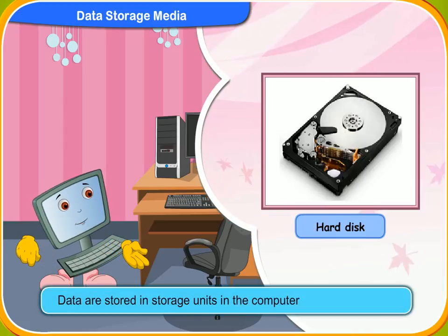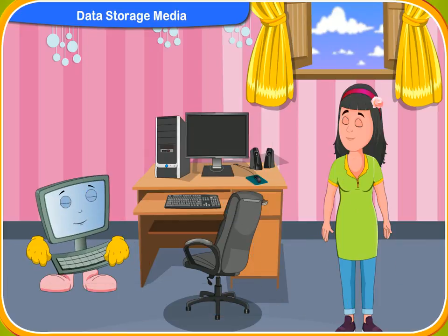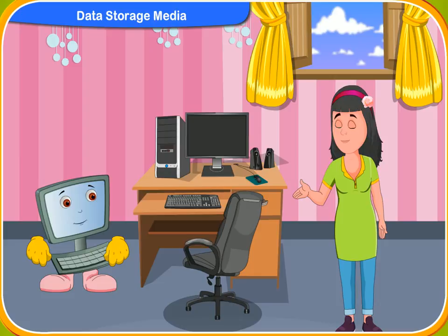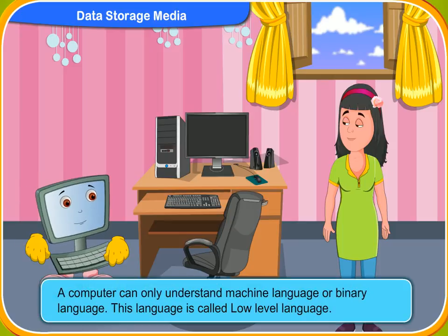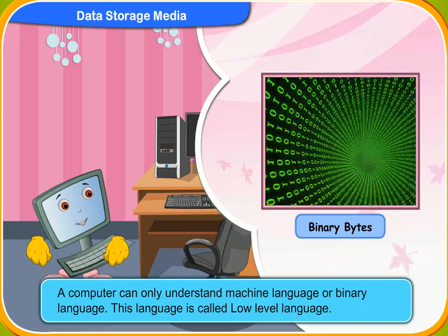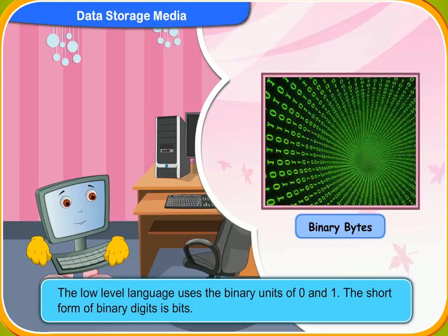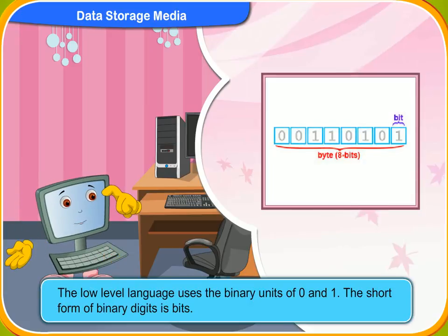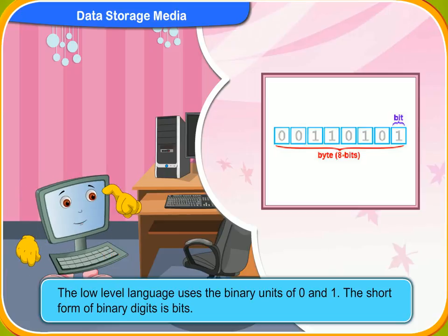Well, Rennie, data are stored in storage units in the computer. To store data, does a computer store things like the way we humans do? No, Rennie. A computer can only understand machine language or binary language. This language is called low-level language. The low-level language uses the binary units of 0 and 1. The short form of binary digits is bits.